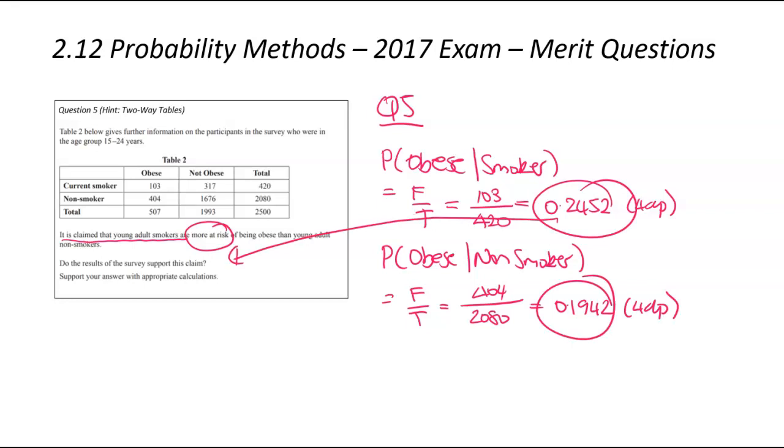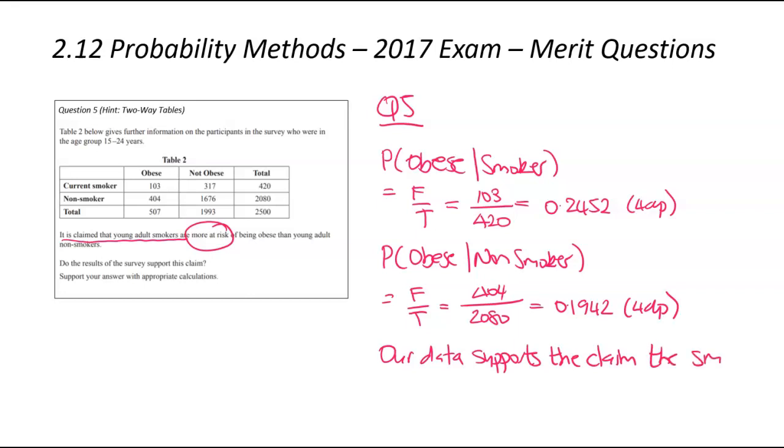Now that we've got the probability of the both, we now need to interpret the numbers and link them back to the claim and the question. So they claimed that if you were a smoker, you were more likely to be obese than if you're a non-smoker. And looking at the numbers, I think the numbers suggest that there's a 5% greater chance that you're going to be obese if you smoke versus if you don't smoke. If maybe there was a 1% or 2% difference, you might say, well, it's too close to call. Maybe something else is happening. But 5% is a pretty big percentage. So we can probably say, yes, that claim is correct based on our numbers.